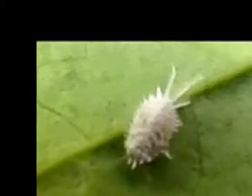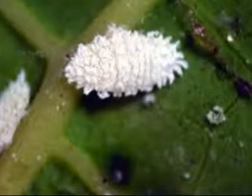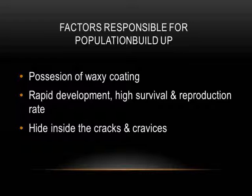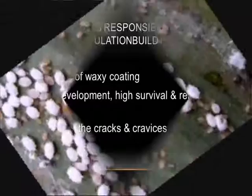Papaya mealybug is most active in warm and dry weather. The factors responsible for their population build-up are: possession of a waxy coating that protects them from insecticides, rapid development, high survival and reproduction rate, and the ability to hide in the cracks and crevices of soil, plants, etc.